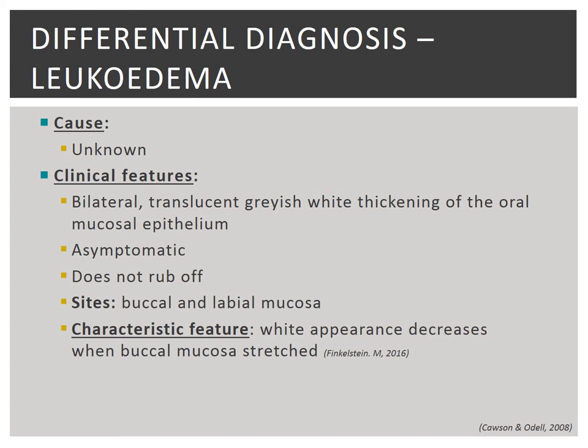Leukoedema is a generalised bilateral translucent and grayish-white thickening of the oral mucosal epithelium. Histopathologically, there is a thickening of the epithelium with intracellular oedema of the spinous layer. It is generally recognised as an anatomical variation rather than a pathological process and its exact cause remains unknown. Leukoedema is asymptomatic and the patient is often unaware of it. Most commonly affected sites include the buccal mucosa and the labial mucosa. Leukoedema can be smooth on palpation or wrinkled and does not rub off. A key feature is that the white appearance decreases when the buccal mucosa is stretched.